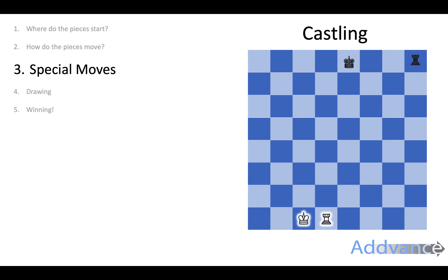Similarly with black it looks like this, but here you can see that the white rook is attacking through the castle, so you cannot castle through an attack. If the king moves through an attack while castling, you are not allowed to do it and you have to play another move.